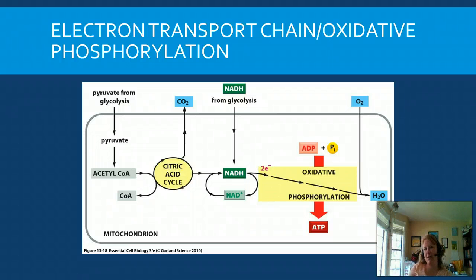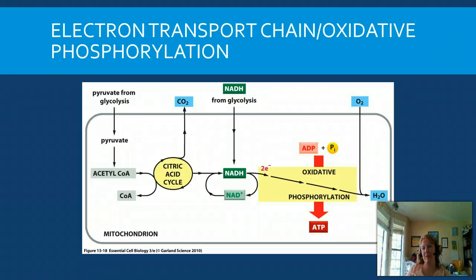One important aspect is oxygen. You never saw oxygen really be involved in the citric acid cycle, but the citric acid cycle is dependent on oxygen being present because the NADH must be recycled to NAD+, or FAD+, in order to return to the citric acid cycle. This recycling only happens at the electron transport chain, and the electron transport chain will not function without oxygen.